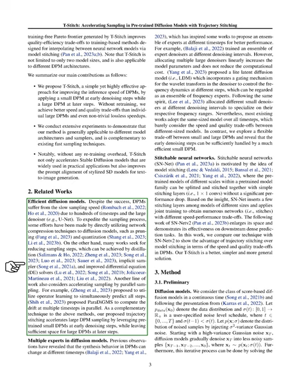To speed up the sampling process, some efforts have been made to apply network compression techniques like pruning and quantization. Others have focused on reducing the number of sampling steps through methods like distillation, implicit sampling, and improved differential equation solvers. Another approach to accelerate sampling involves parallel sampling, where techniques like operator learning and paradigms have been proposed to predict multiple steps simultaneously or compute the drift at several time steps in parallel.